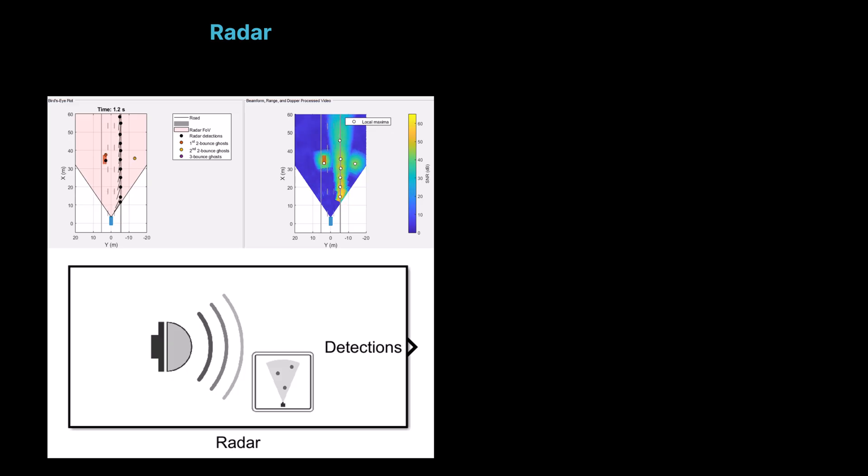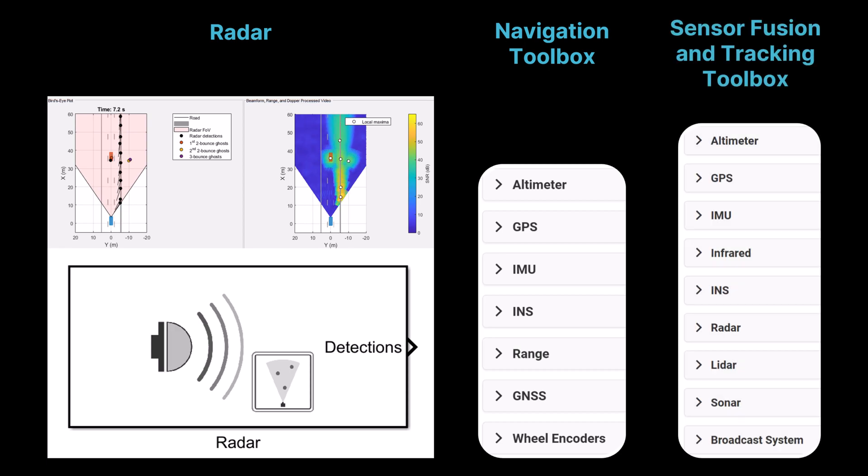Additionally, Simulink offers a wide range of other sensor models, including radar, as well as those provided by the navigation toolbox and the sensor fusion and tracking toolbox.